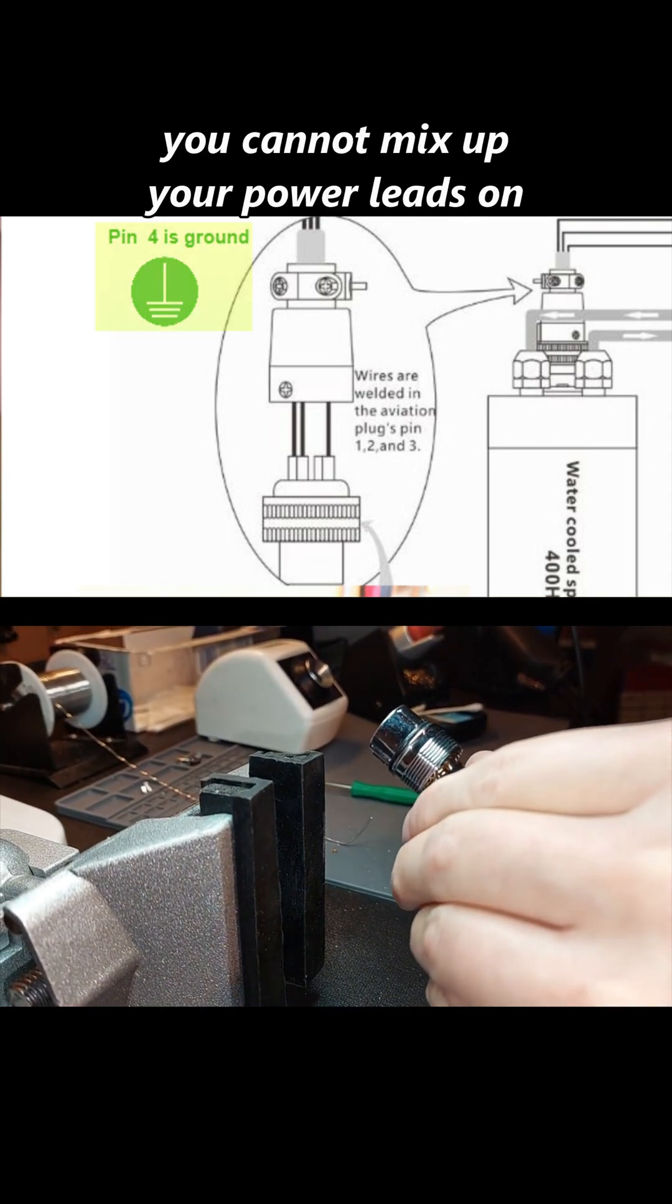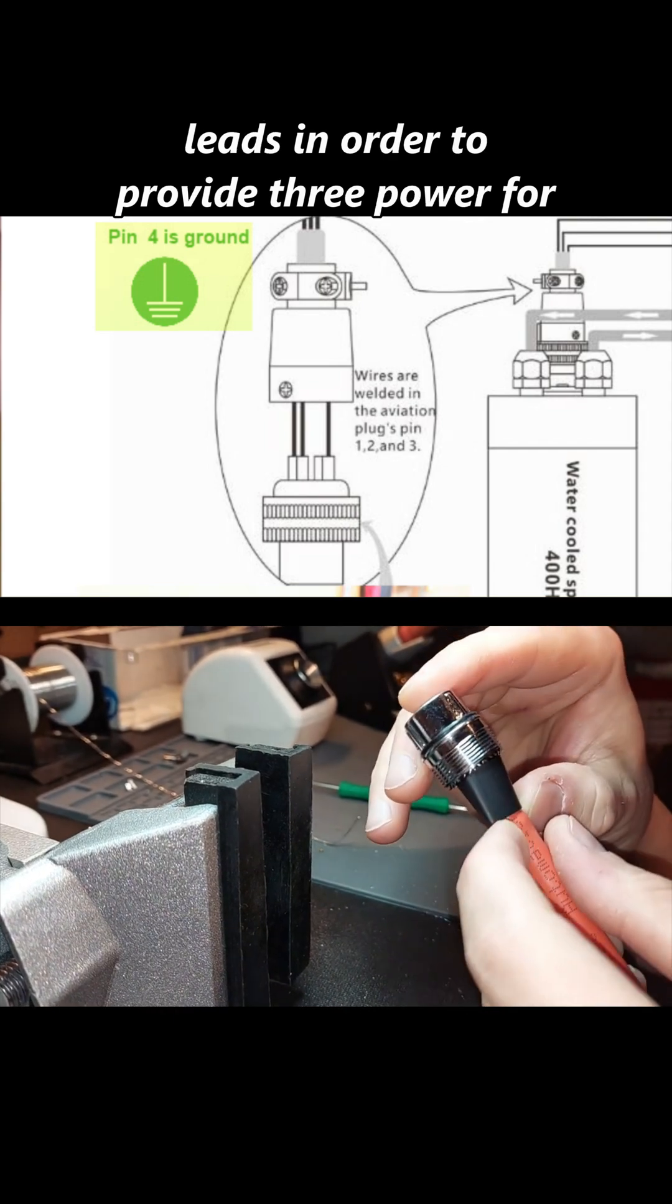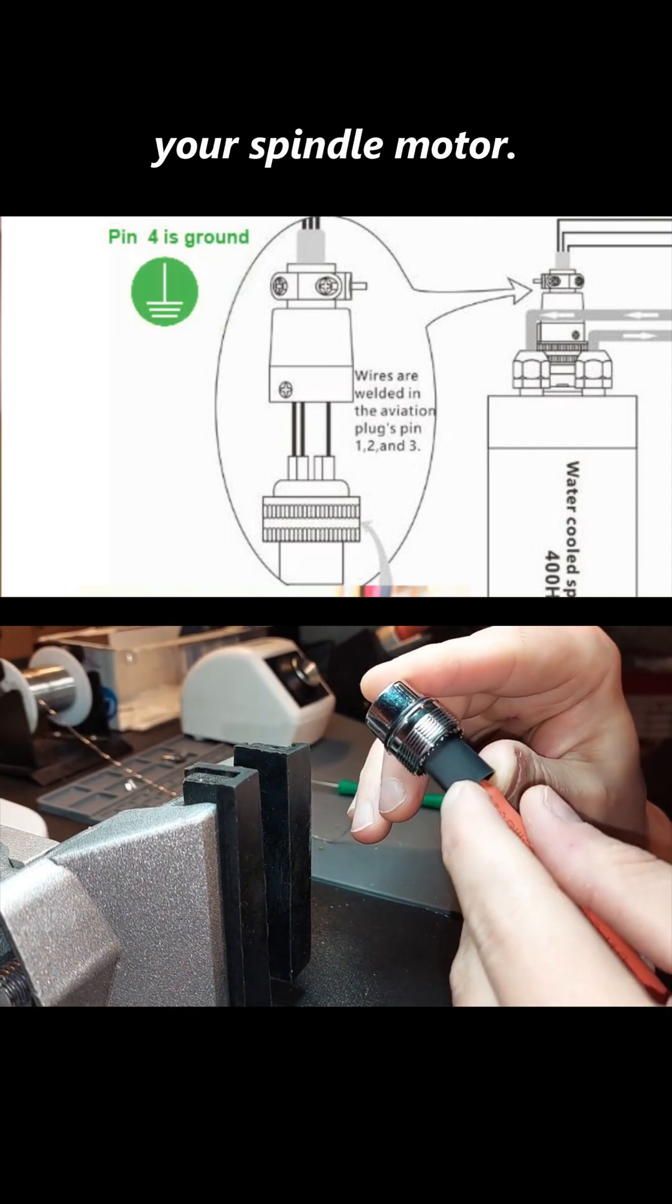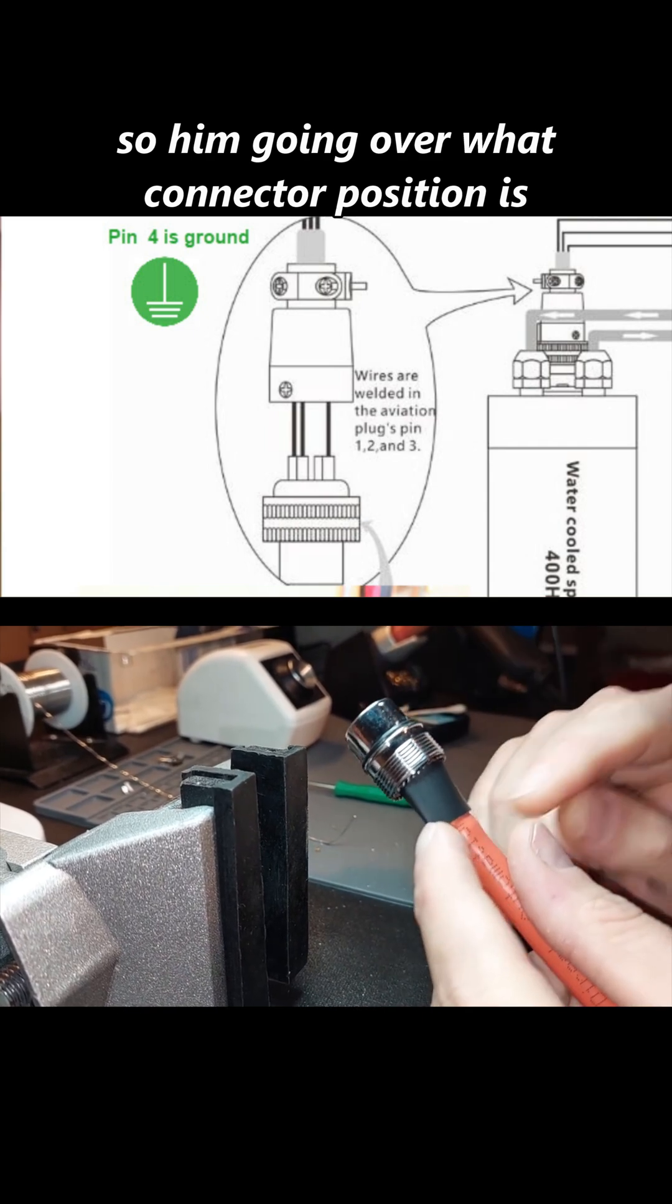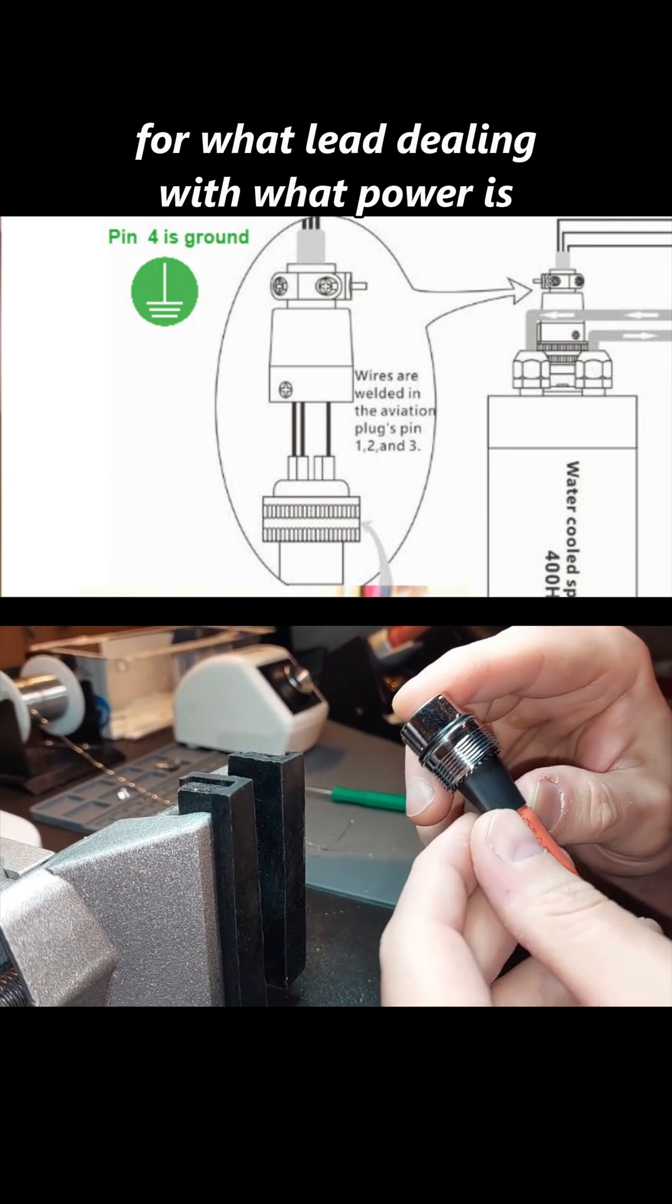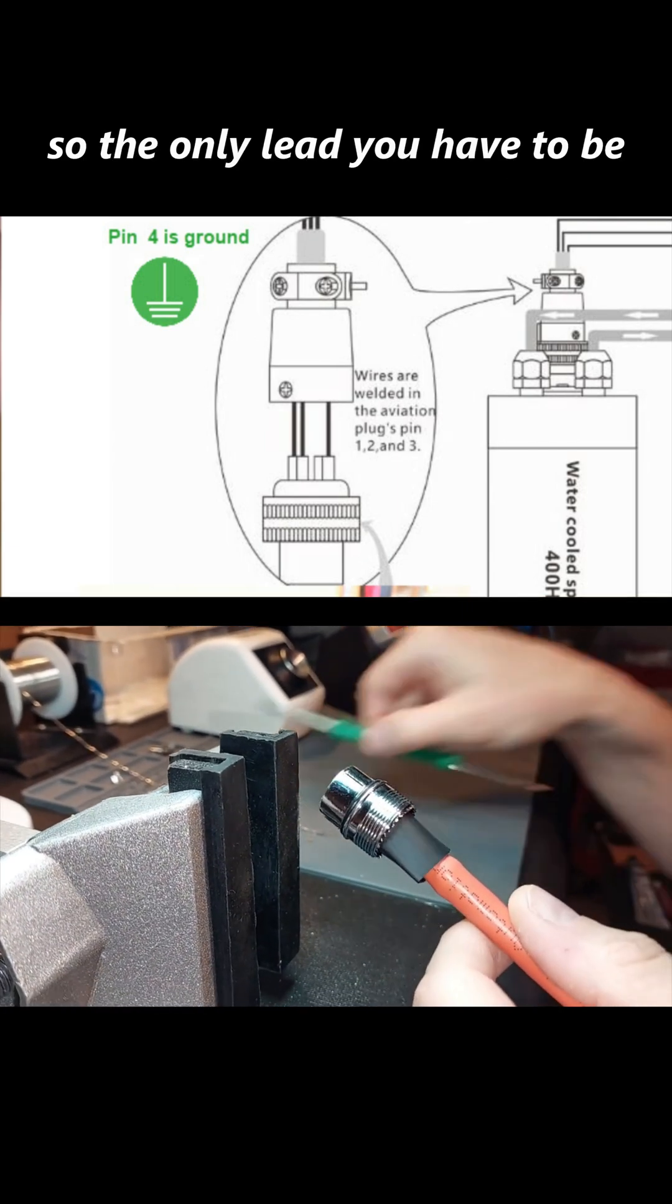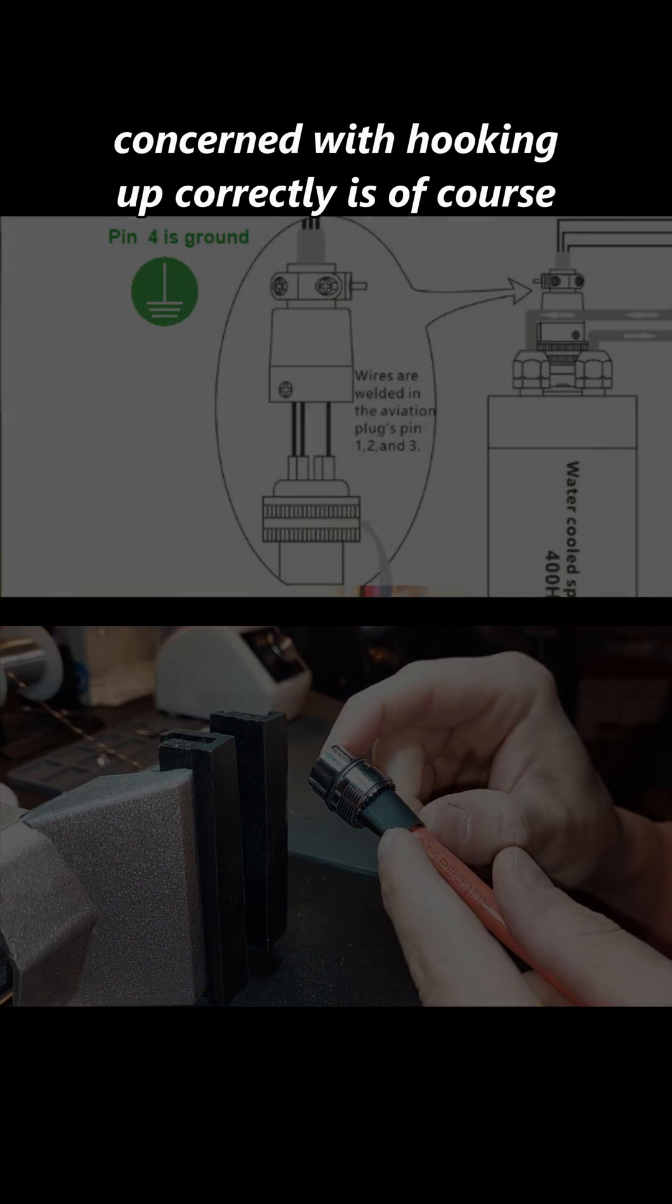You cannot mix up your power leads on the remaining three because they are all power leads in order to provide three-phase power for your spindle motor. So him going over what connector position is for what lead dealing with what power is going to the spindle is irrelevant. So the only lead you have to be concerned with hooking up correctly is, of course, the ground.